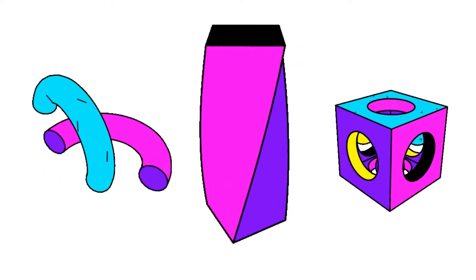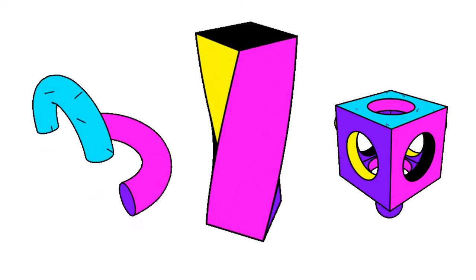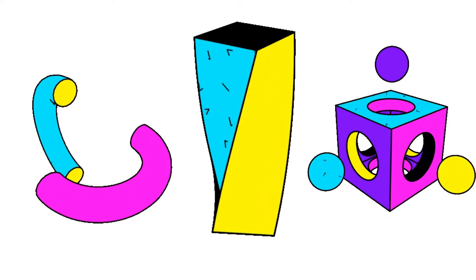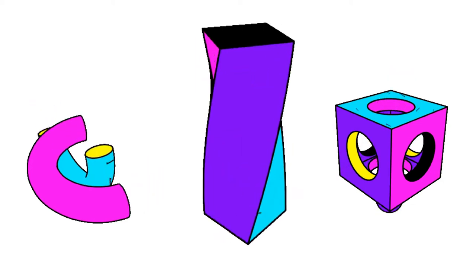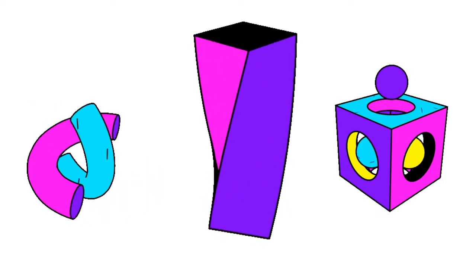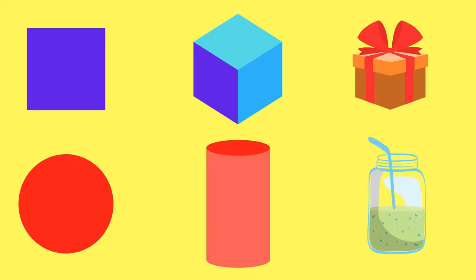Geometric shapes are flat. Geometric forms are forms that are mathematical and precise, like shapes, but they also have volume and mass. Some examples are sphere, cube, pyramid, cone, and cylinder.